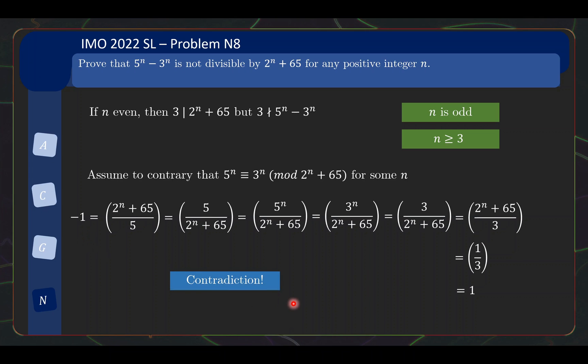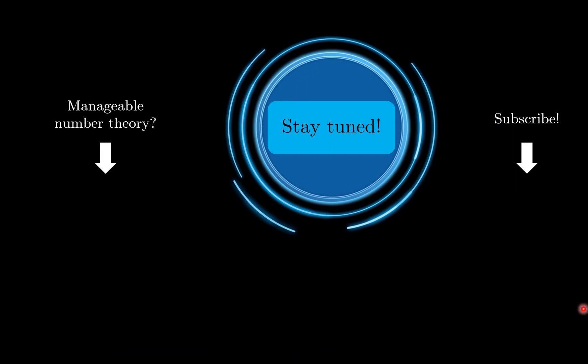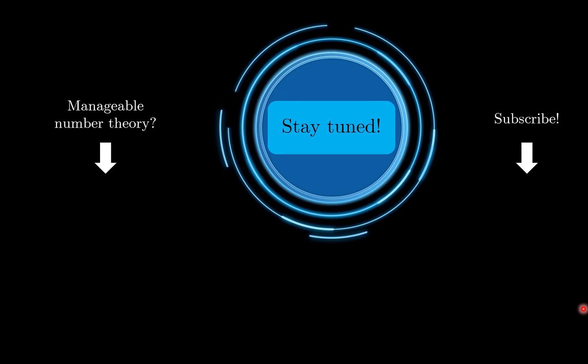So we have -1 equals 1, and this gives a contradiction. That is all to the proof of problem N8, which is really funky. Thankfully, it's not selected as the P6 of IMO 2022, because that would be a complete disaster where a whole bunch of people familiar with Jacobi's symbol would end up getting 7 points. What do you think of these two number theory problems? Hope you learned something from this video. Stay tuned to the channel for more math videos, and see you soon.